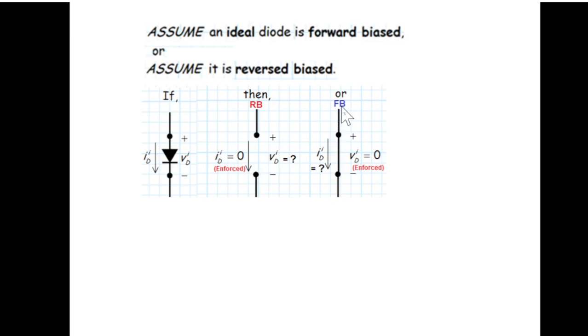Similarly, if the diode is forward biased then we represent it by a short circuit. The voltage drop across the short circuit is zero, so this is the enforced condition that Vd has to be zero, and we have to find the current through the diode.